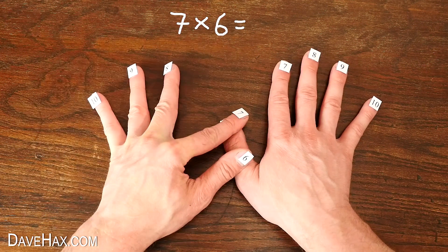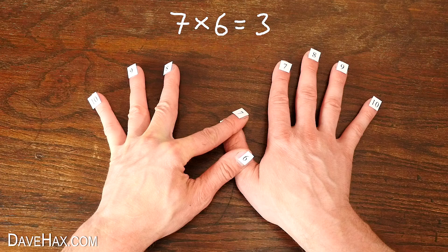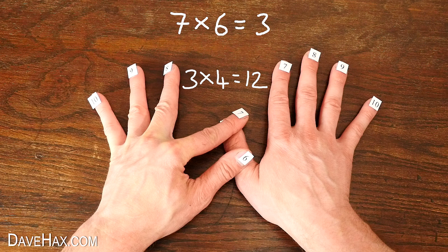7 times 6 is similar. First digit is 3, and the second digit is 3 times 4, 12. Carry the 1 over the top, add it to the 3, and our final answer is 42.